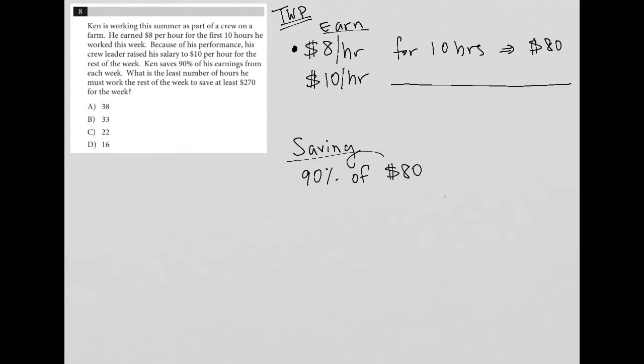So how do I translate that into math? Well, that would be 0.9, because percentages on this test are always the decimal form. Of means to multiply. So 0.9 times 80. So when I do that math, I get $72.